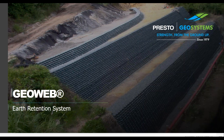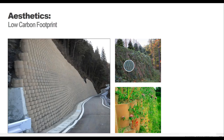Why would you want to use the GeoWeb earth retention system instead of a different wall type? Aesthetics and cost are compelling reasons. GeoWeb walls are aesthetically pleasing and environmentally friendly due to their no-maintenance vegetation. Using local grasses and flowering vegetation helps ensure easy growth and a natural look. Installation is fast and materials are lightweight and easy to assemble. GeoWeb MSE walls are less expensive for both materials and labor compared to traditional MSE walls such as masonry or gabion block walls, and they have a lower carbon footprint in terms of manufacturing and transportation.